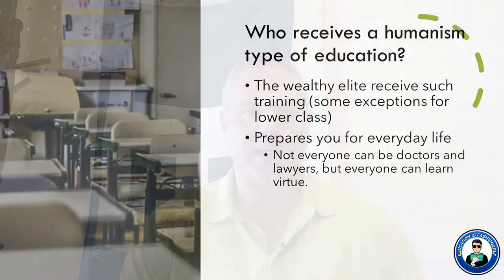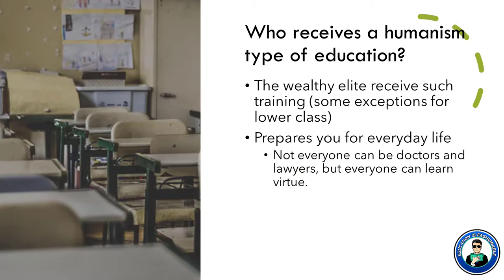Humanism was also involved in education, so you have to think about who's going to receive an education based on humanism. We go back to our three estates discussed in our last lesson. It's probably not going to be the third estate because they were, for the most part, the working class. There were some exceptions with wealthier individuals, but that's not the rule. For the most part, it's members of the second estate — the nobility — who gain access to these humanistic styles of education.